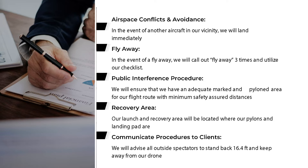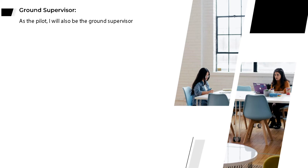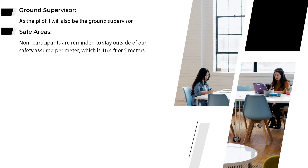Public interference procedure: we will ensure we have an adequate marked and pylon area for our flight route with minimum safety-assured distances. Recovery area: our launch and recovery area will be located where our pylons and landing pad are. Communicating procedures with clients: we will advise all outside spectators to stand back 16.4 feet and away from our drone. Ground supervisor: as the pilot, I will also be the ground supervisor. Safe areas: non-participants are reminded to stay outside our safety-assured perimeter, which is 16.4 feet or 5 meters.